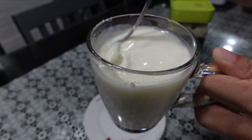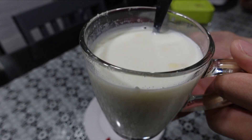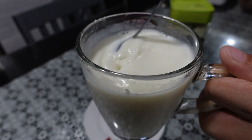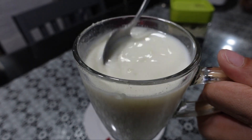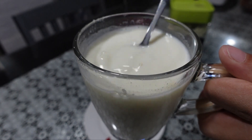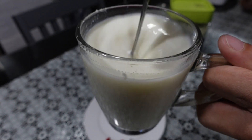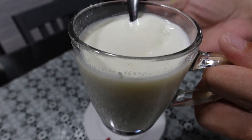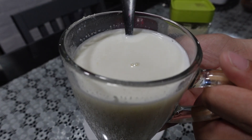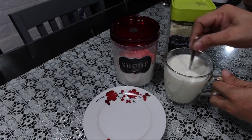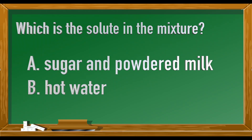After a thorough stirring, the solid substances — the powdered milk and the sugar — dissolve in the hot water. This is called a milk solution, which classifies as a homogeneous mixture. Based on our activity, which is the solute in the mixture: A) sugar and powdered milk, or B) hot water?